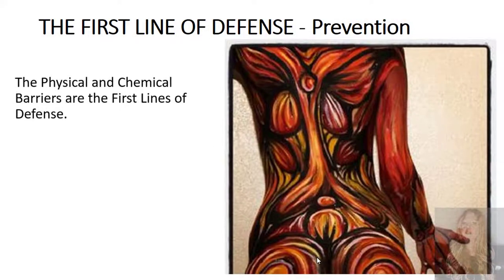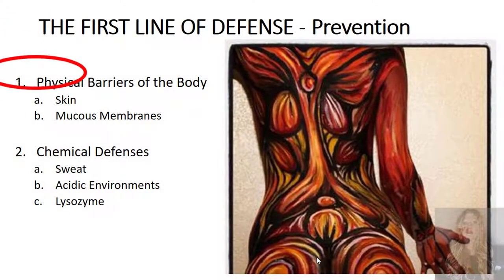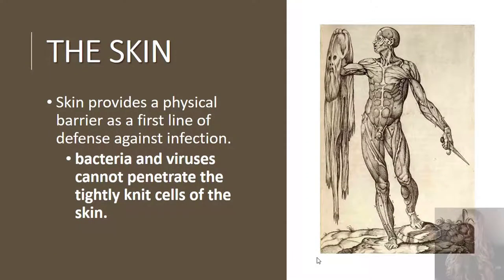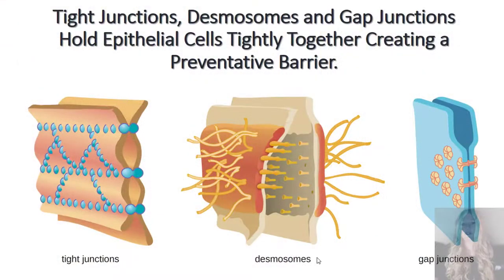The first line of defense of the body is preventative. These are the physical and chemical barriers that we have. The first physical barrier we will discuss is our skin. Our skin provides a physical barrier against infection by bacteria and viruses. Bacteria and viruses cannot penetrate the tightly knit skin cells. The reason for this is something called cell junctions. Here are three types of cell junctions: tight junctions, desmosomes, and gap junctions.